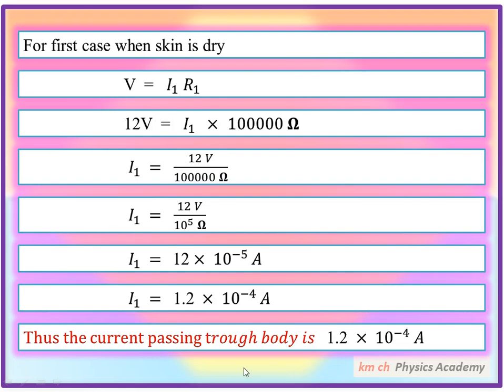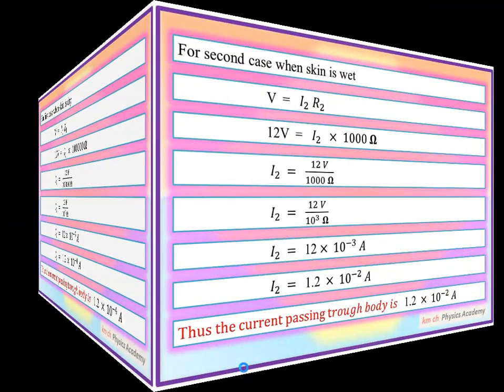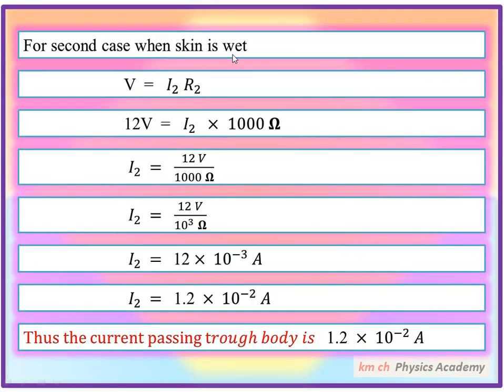For second case when skin is wet, V equals I2 R2. V is 12 volt, I2 we need to find. Now R2 is 1000 ohms. This 1000 ohms divides 12 volt. 1000 is 10 to the power 3, which becomes 10 to the power minus 3.